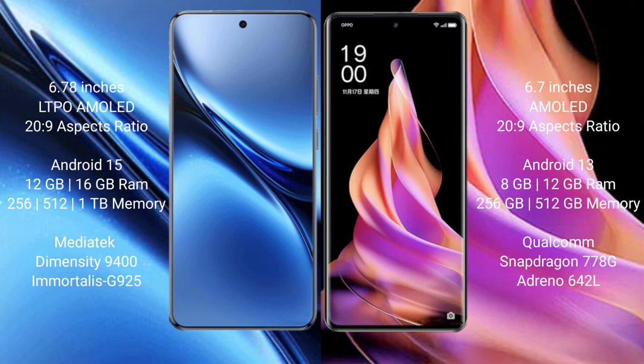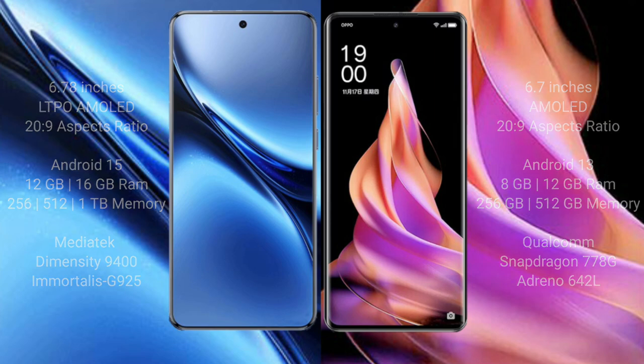The Vivo X200 Pro comes with 16GB RAM and 256GB, 512GB, or 1TB internal storage options, powered by the MediaTek Dimensity 9400 processor with Mali-G925 GPU. The Oppo Reno 9 Pro comes with 16GB RAM and 256GB or 512GB internal storage, powered by the MediaTek Dimensity 8100 Max processor with Mali-G610 GPU.